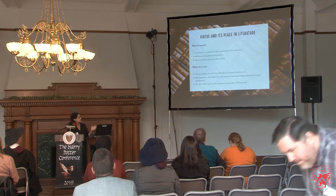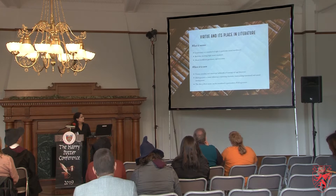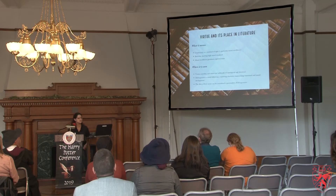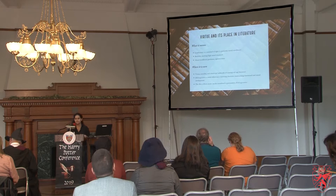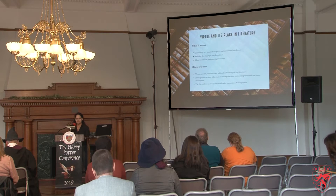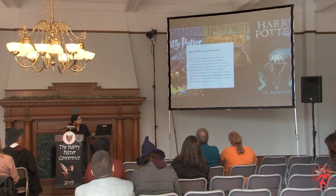First I wanted to talk about virtue and its place in literature. Virtue, as I framed it for my paper, is typically known as a conformity to a standard of right or the achievement of a particular moral excellence. It is behavior associated with high moral standards and is synonymous with moral excellence, goodness, and righteousness. In literature it's usually seen in coming-of-age literature because virtue, morality, and choice are typically very big themes there. There's the term Bildungsroman, which is a novel that follows a character's moral development and education.